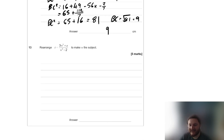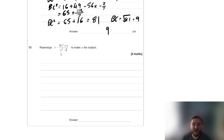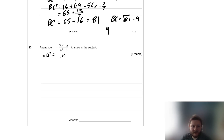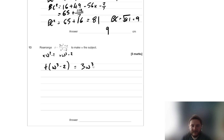We'll squeeze this one in as well. Rearrange: t equals (3w³ + a) over (w³ − 2), making w the subject. First, multiply both sides by (w³ − 2) to get t(w³ − 2) equals 3w³ + a. Expanding: tw³ − 2t equals 3w³ + a.